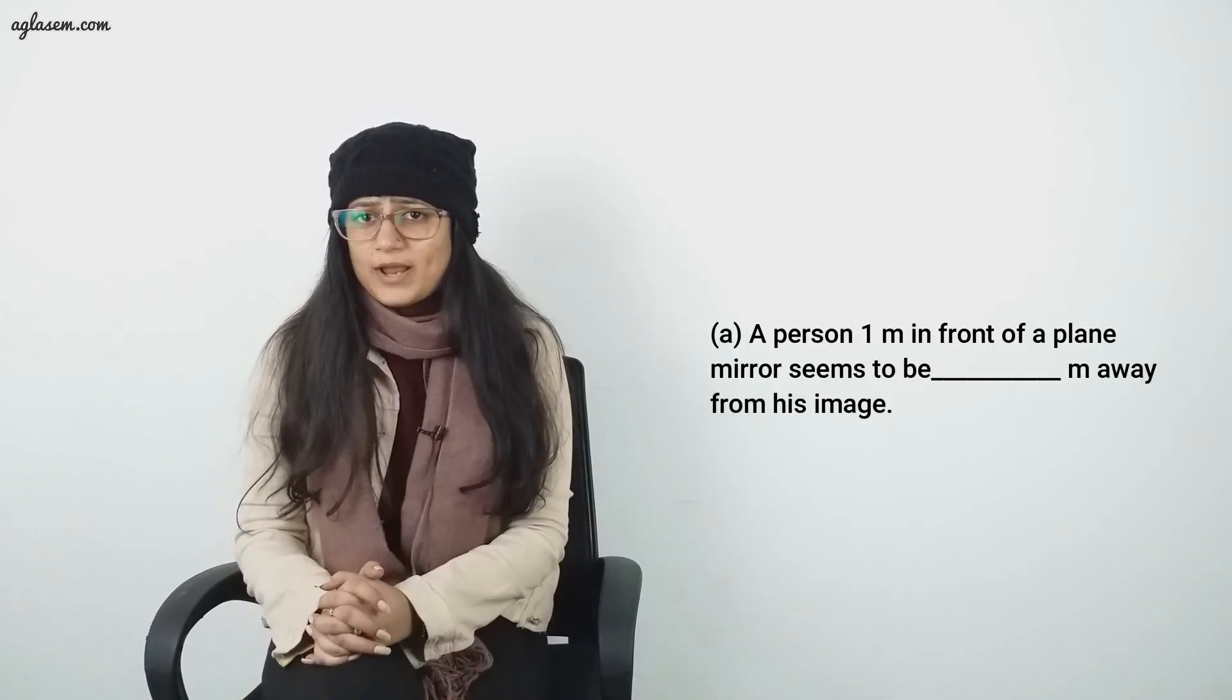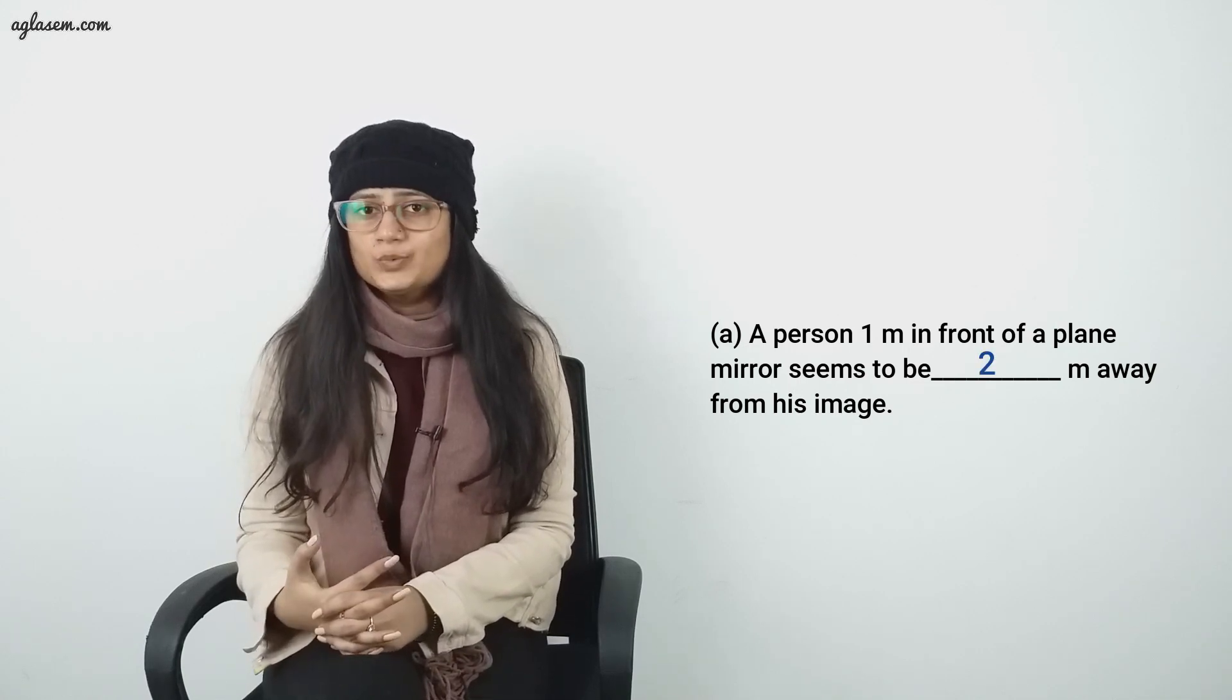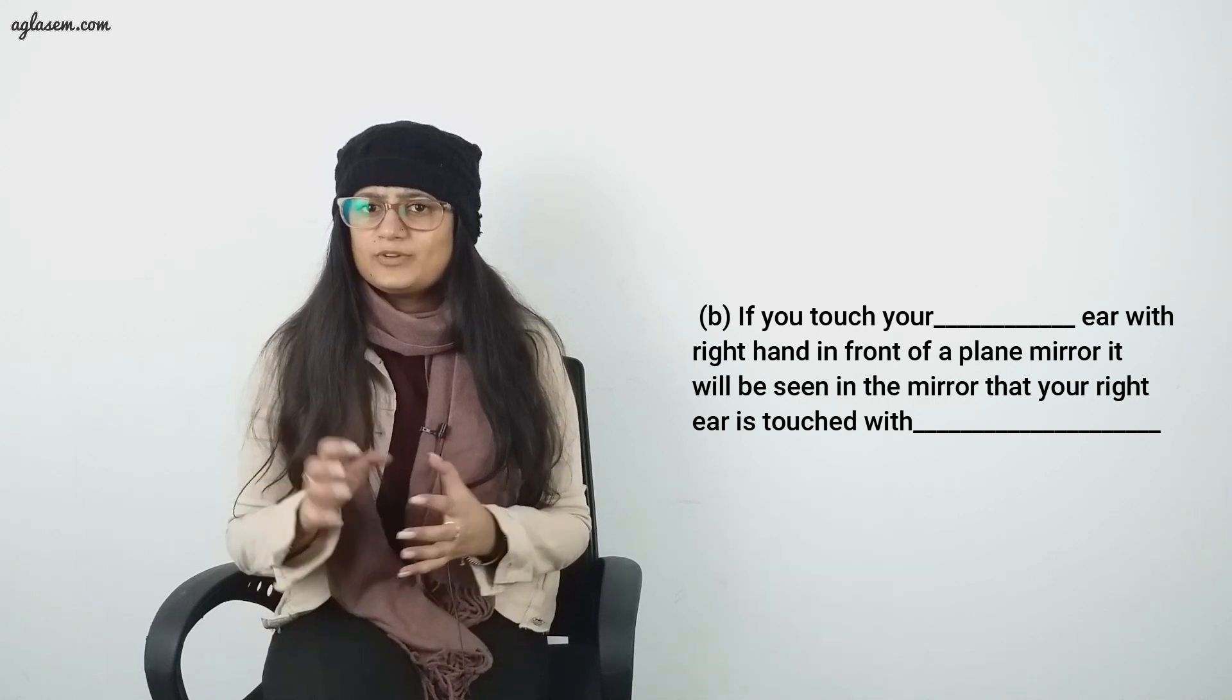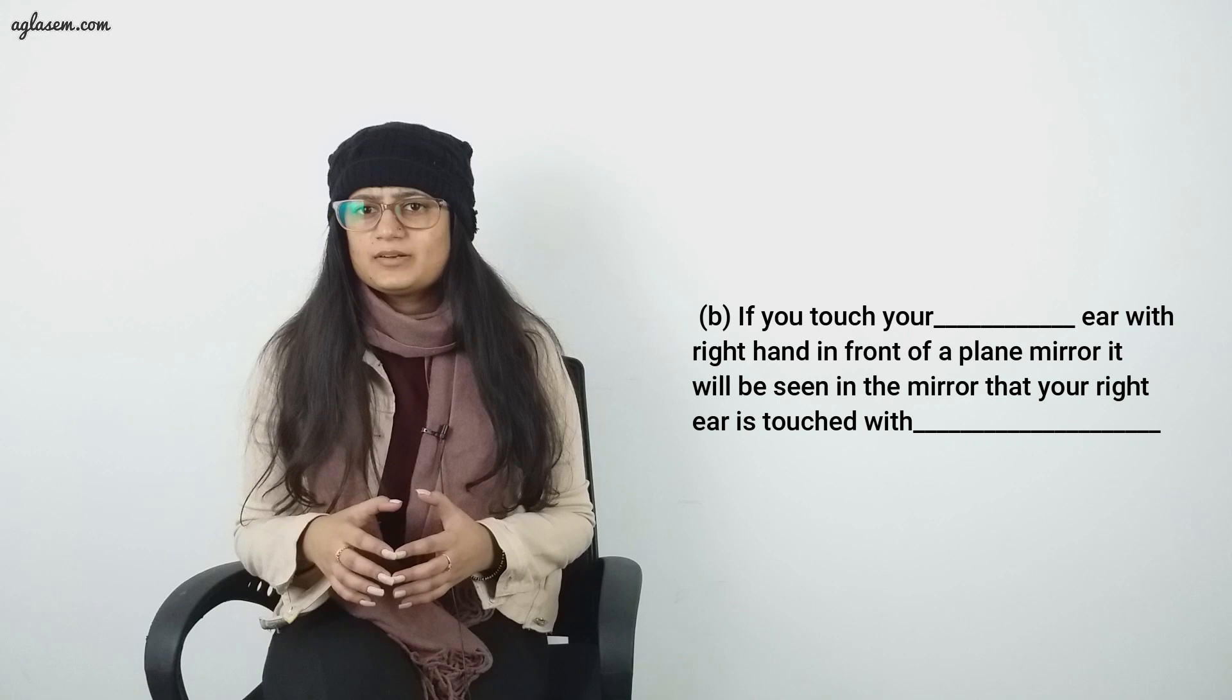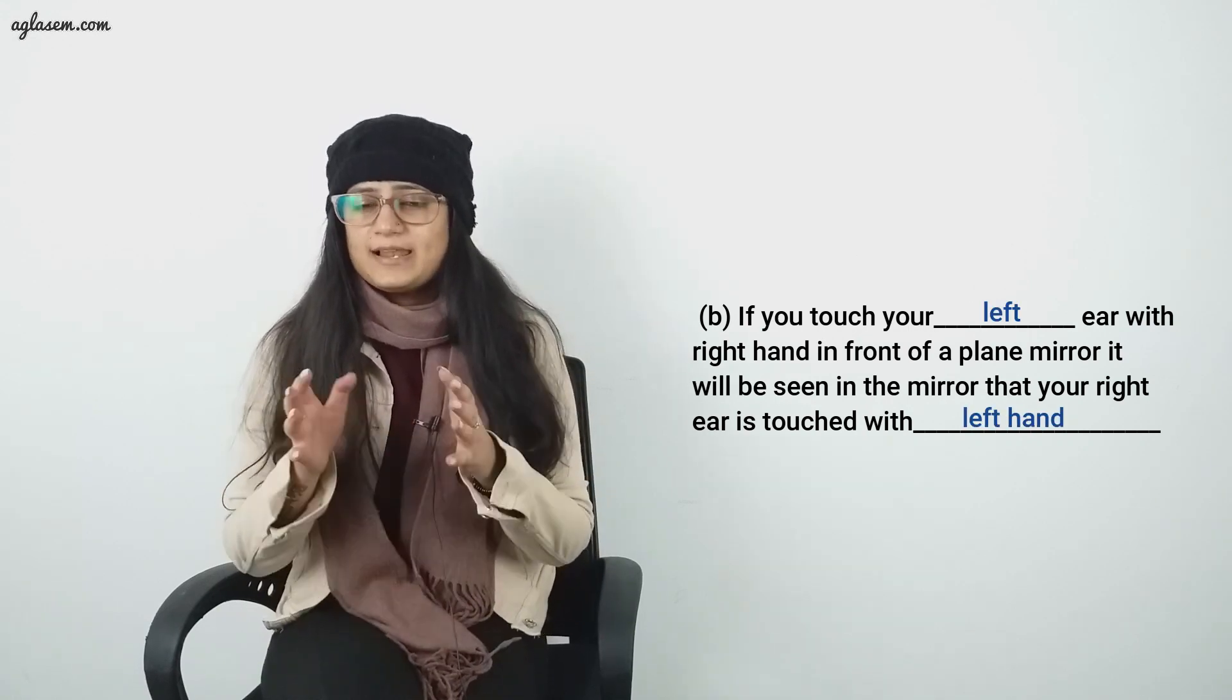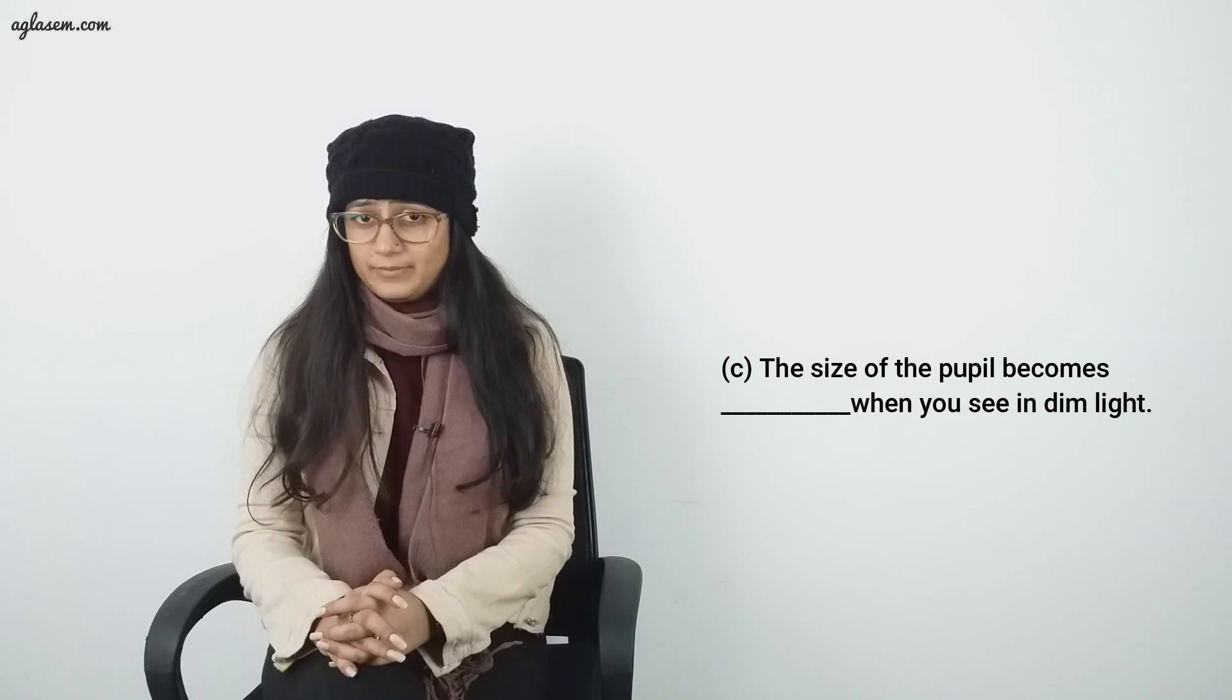Question number 6: Fill in the blanks. Part A: A person one meter in front of a plane mirror seems to be 2 meters away from his image. Part B: If you touch your left ear with right hand in front of a plane mirror, it will be seen in the mirror that your right ear is touched with left hand. Part C: The size of the pupil becomes large when you see in dim light.